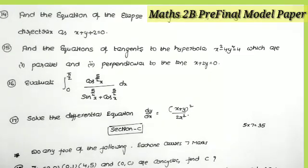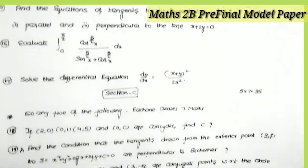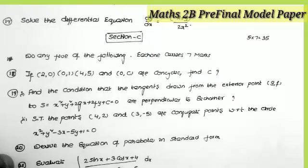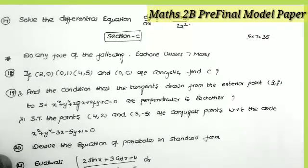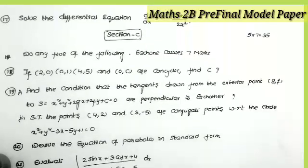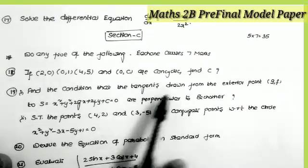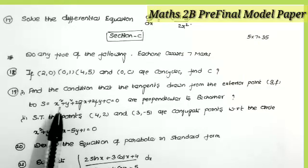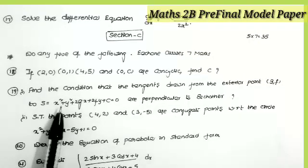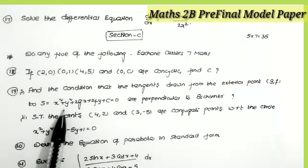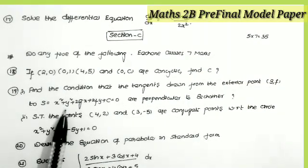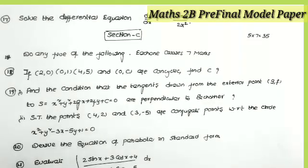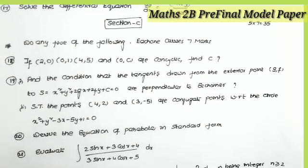These are the four-mark questions. Now let us see the seven-mark questions. Section C — do any five of the following, each one carries seven marks. The first question is from circles: if (2, 0), (0, 1), (4, 5), and (0, c) are concyclic points, then find the value of c.